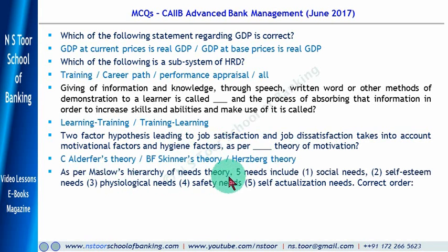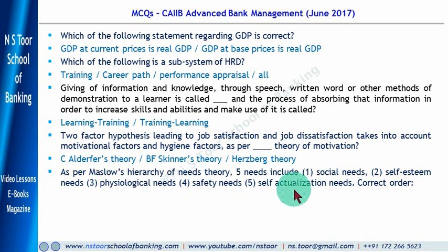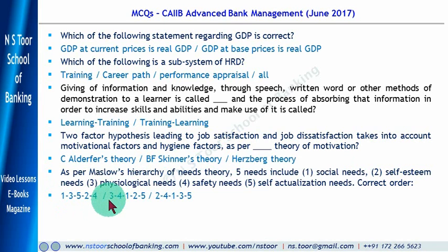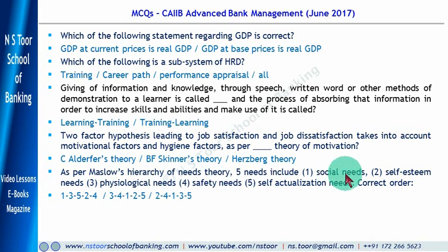As per Maslow's hierarchy of needs theory, five needs include social needs, self-esteem needs, physiological needs, safety needs, and self-actualization needs. What is the correct order? The correct hierarchy is: first, physiological needs; second, safety needs; third, social needs; fourth, self-esteem needs; and fifth, self-actualization needs. This answer is the correct one.